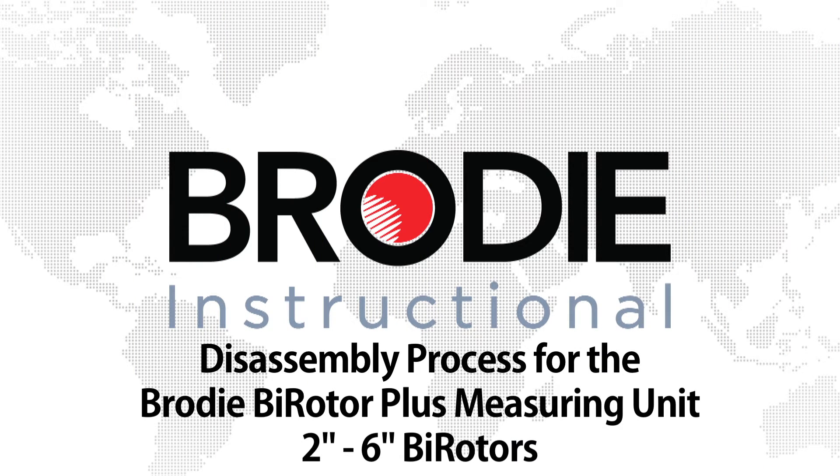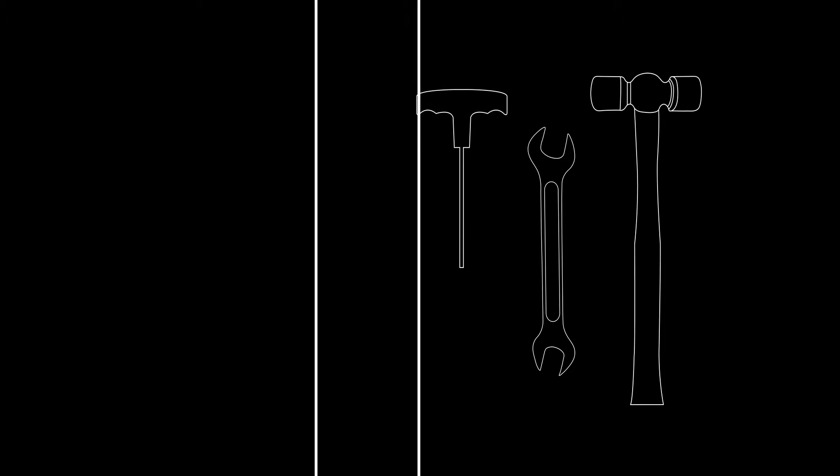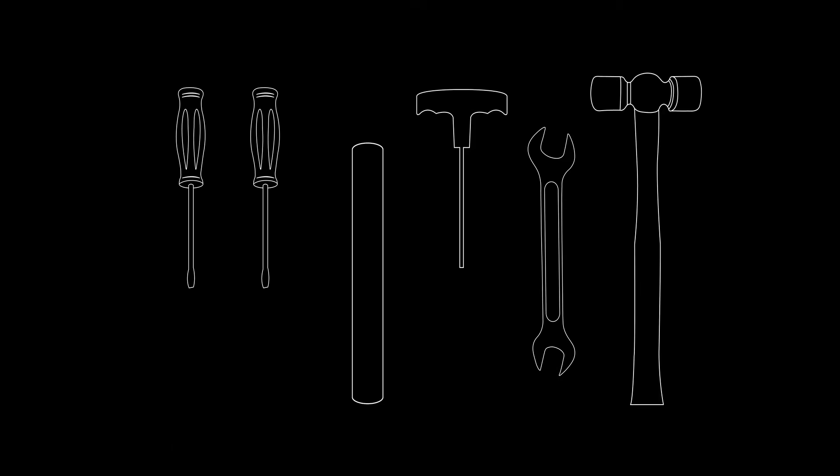This is the disassembly process for the Brody Bi-Rotor Plus measuring unit. For this process, you'll need a rubber mallet, a wrench, an Allen wrench, a blocking stick, and two flathead screwdrivers.